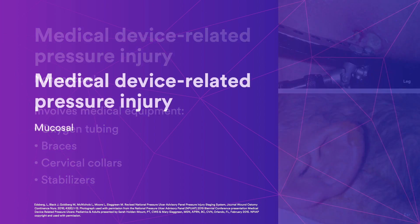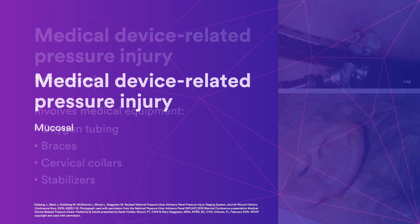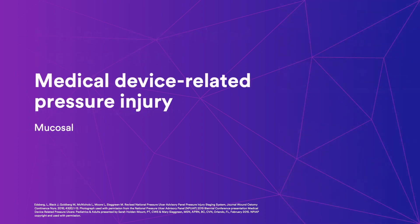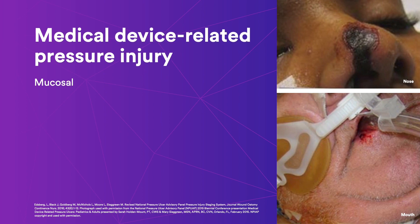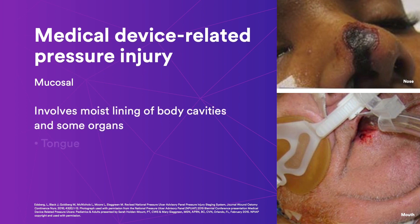Mucosal membrane pressure injuries involve the moist lining of body cavities and some organs. A picture labeled 'nose' shows a dark red injury on a person's nose; a picture labeled 'mouth' shows a red injury on a person's lip. Because of their structural differences, medical device-related pressure injuries that occur on mucosal tissues such as the tongue, nasal passages, and genitals cannot be staged using traditional staging. These injuries are defined as mucosal membrane pressure injuries.